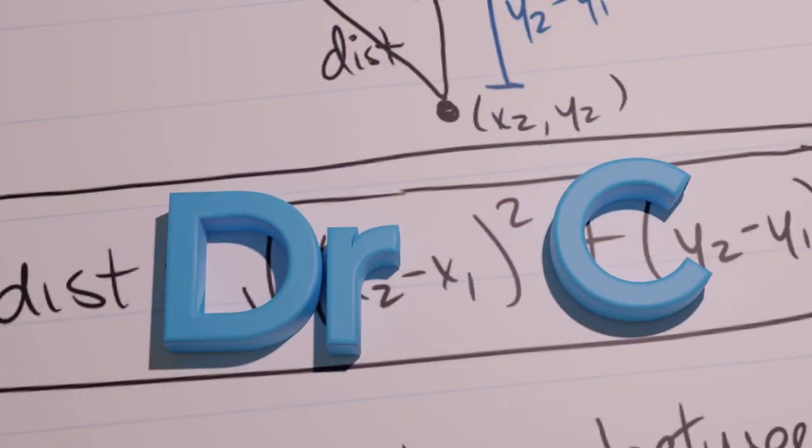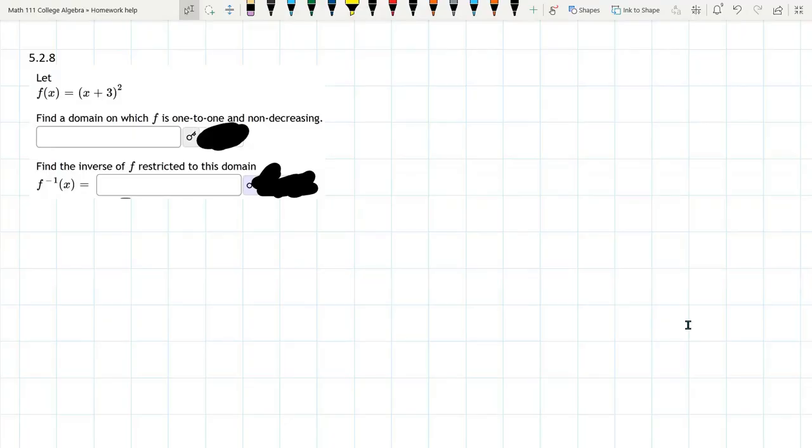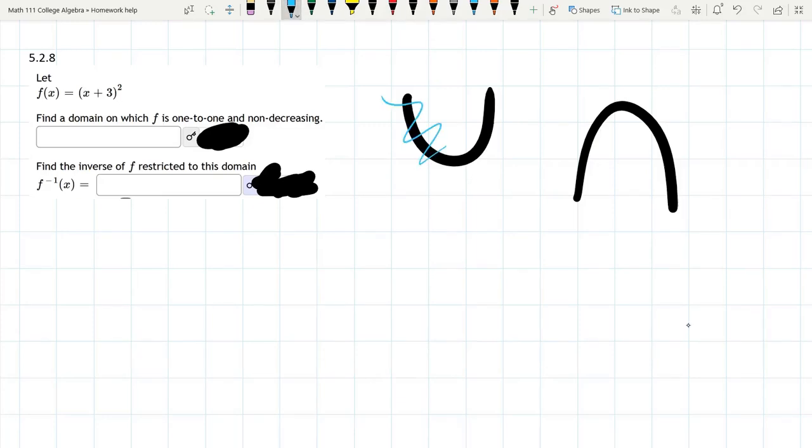In this problem we have a quadratic function. We're going to find the inverse, but every quadratic is not one-to-one. They're either a happy parabola or a sad parabola, and what we're going to do is cross out half the domain and describe the other half, and then once we've forced it to be one-to-one we're going to find the inverse.